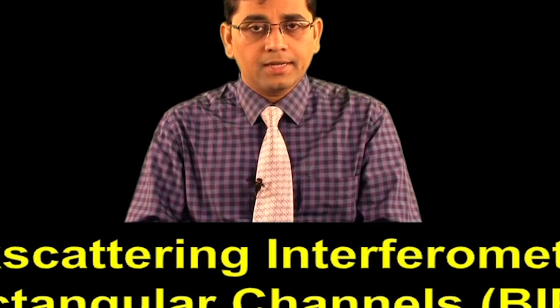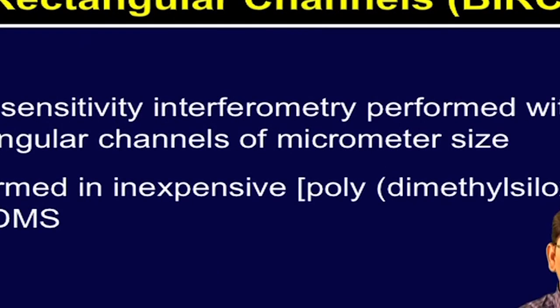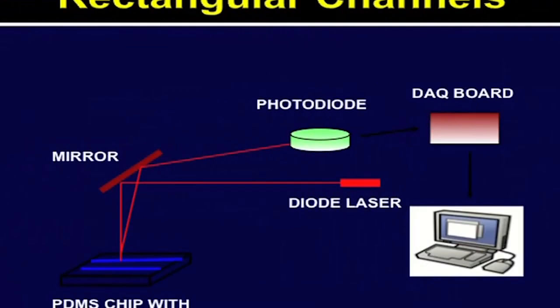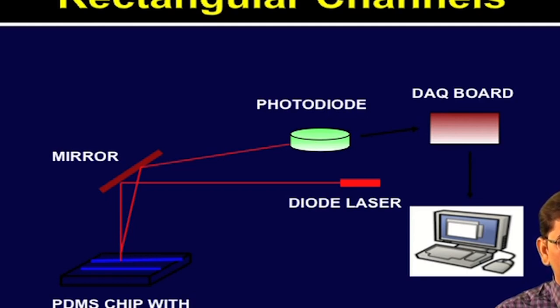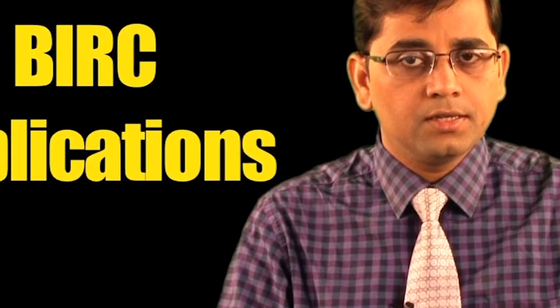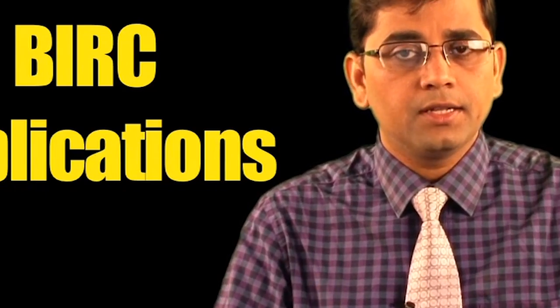One of the interferometry techniques is BIRC or back scattering interferometry in rectangular channels. This is a highly sensitive interferometry approach performed within rectangular channels of micrometer size, which are formed in inexpensive PDMS which is printed on surface. Here is the configuration of BIRC — the micrometer sized rectangular channels are modulated within the PDMS chips and this interferometry principle is applied here for measurement of interference due to the biomolecular interactions. BIRC has been applied for many versatile applications, demonstrating the power and versatility of the approach for detecting protein ligand interactions in complex environments.